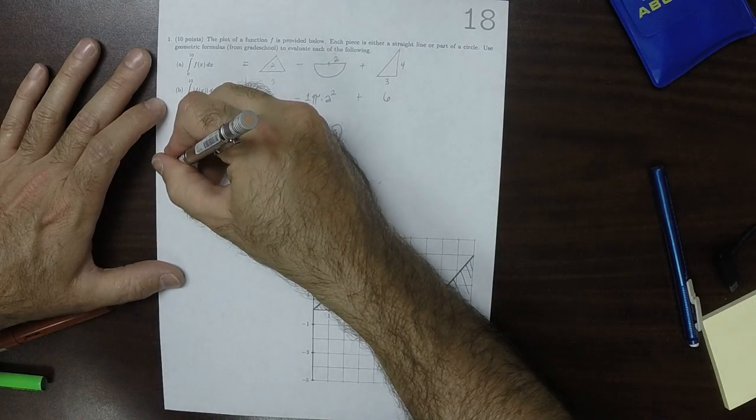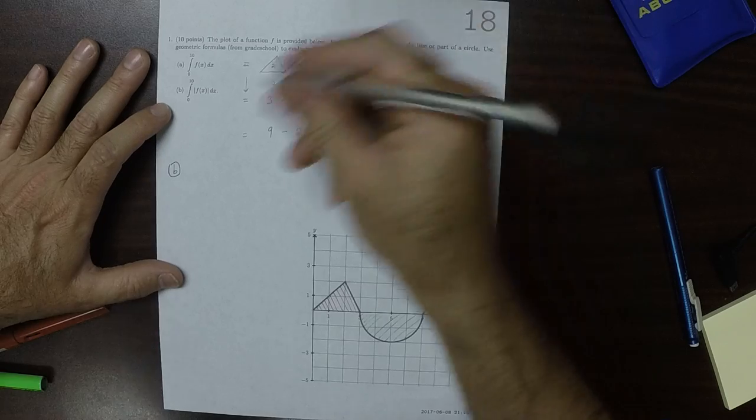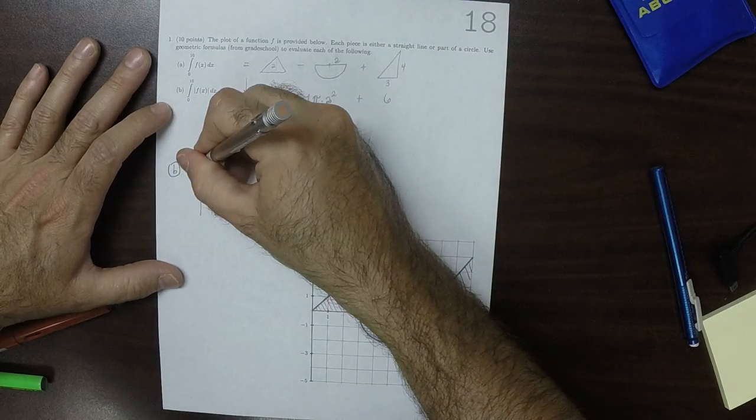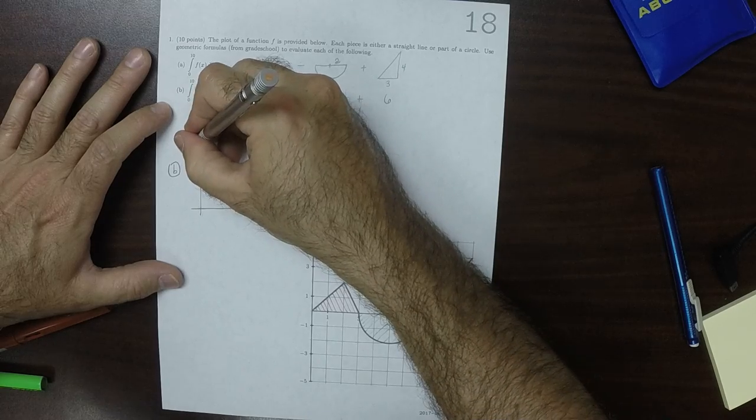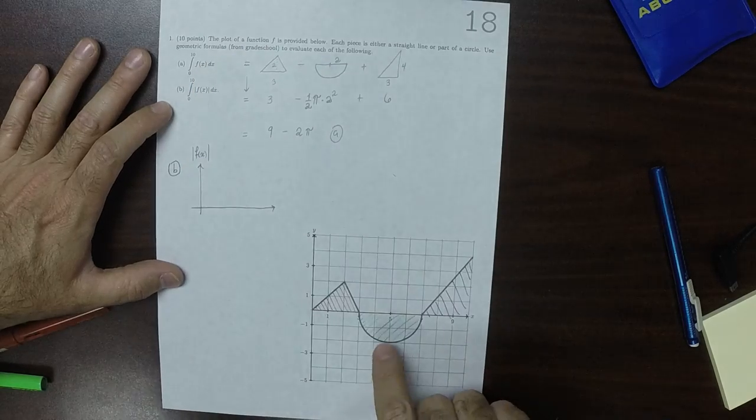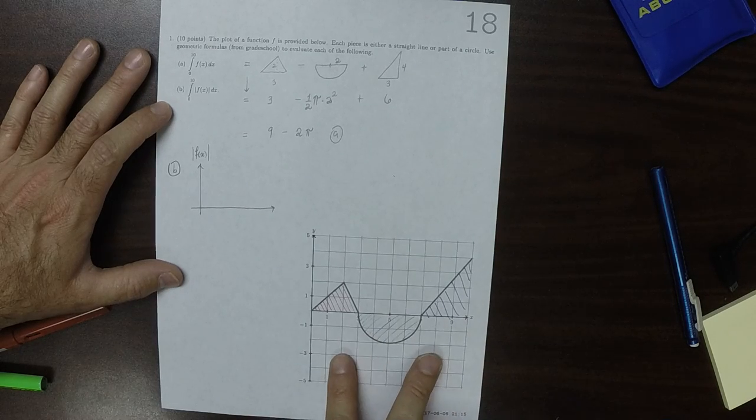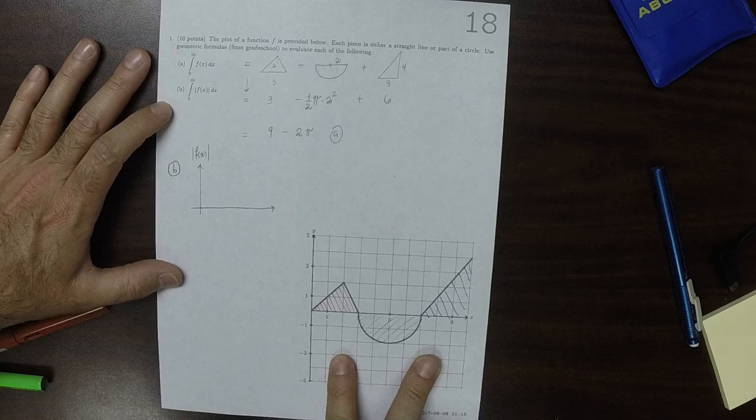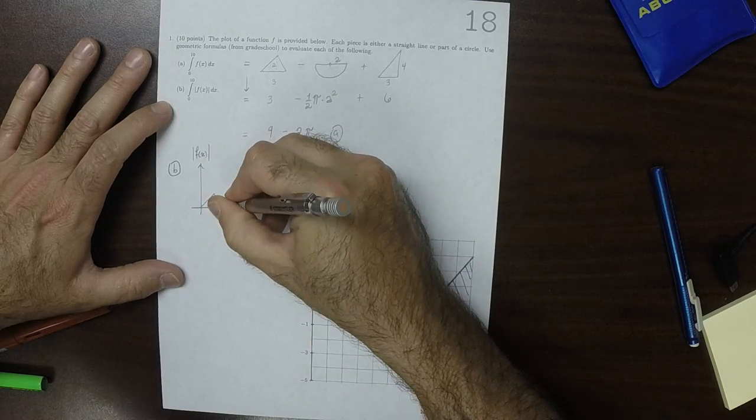As for part B, if we were to plot the absolute value of f of x, that has the effect of flipping any areas that are below the horizontal to be above the horizontal so that the result now looks like this.